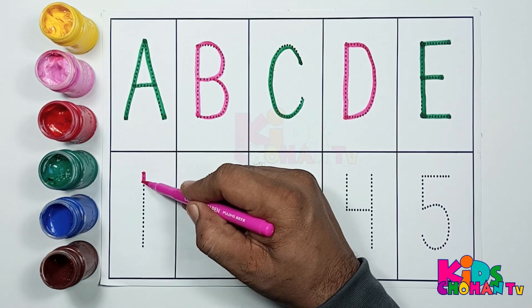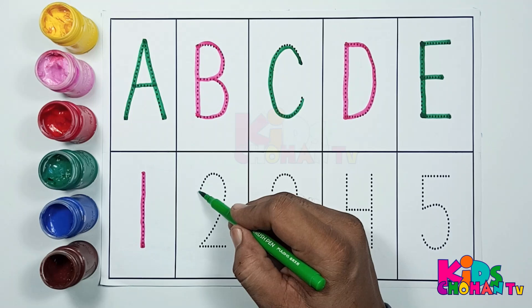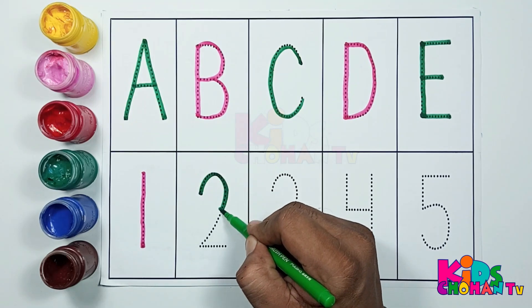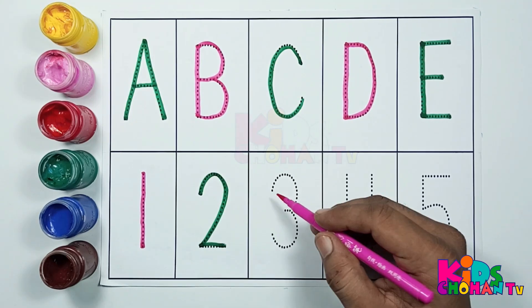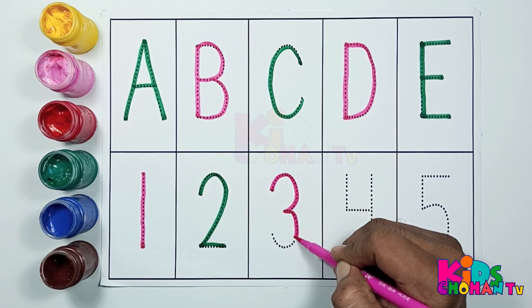Counting. Number 1: O-N-E, 1. Number 2: T-W-O, 2. Number 3: T-H-R-E-E, 3.